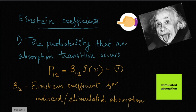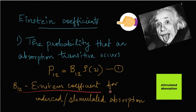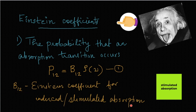The first coefficient concerns absorption: the probability that an absorption transition occurs is given by P12. Here, B12 is the Einstein coefficient for induced or stimulated absorption.